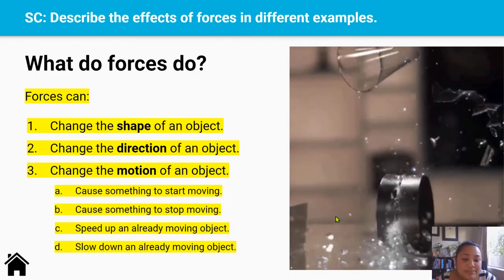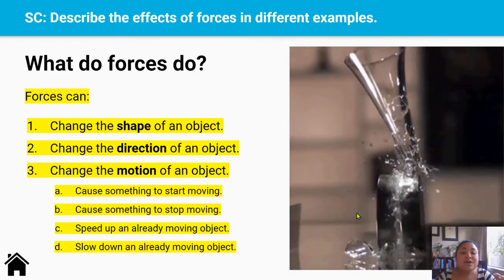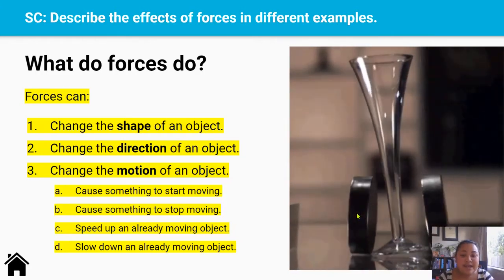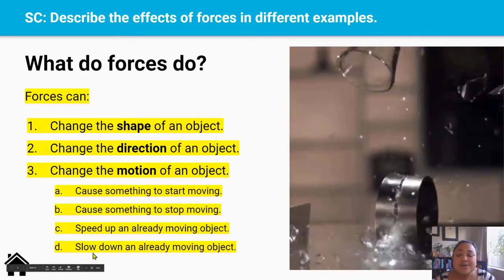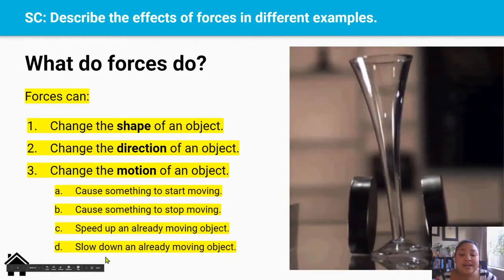So these magnets are already moving and as they move closer to each other, they speed up, they accelerate. And they also cause objects are already moving to slow down.